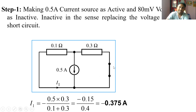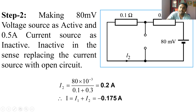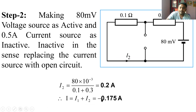In Step 2, I make the 80 mV voltage source active and replace the 0.5 A current source with an open circuit. The circuit becomes a single loop with both resistances in series, so I2 = 80 mV / (0.1 + 0.3). The current direction in this step is positive. By the Superposition Theorem, the total current is I1 + I2 = −0.375 + 0.2 = −0.175 A.